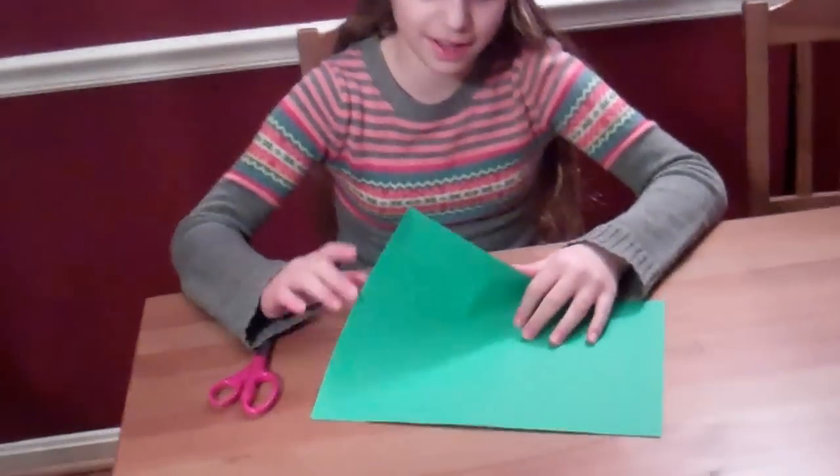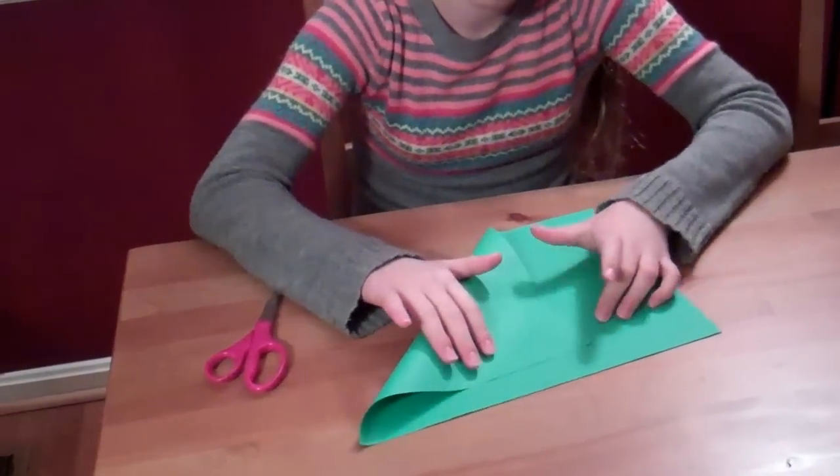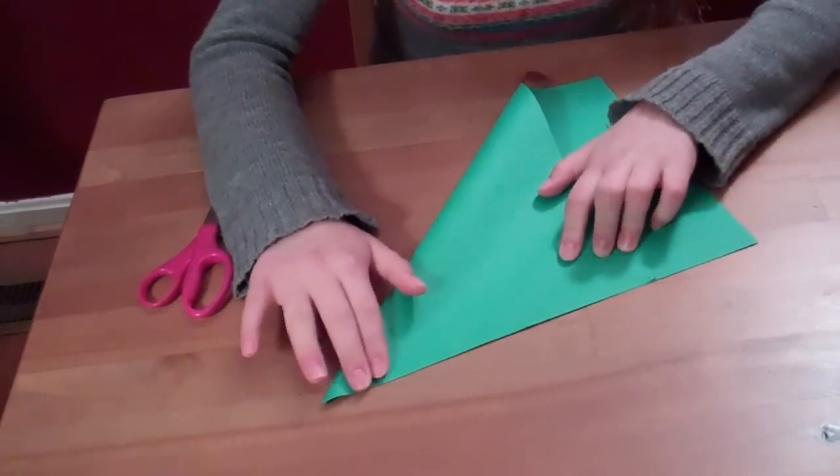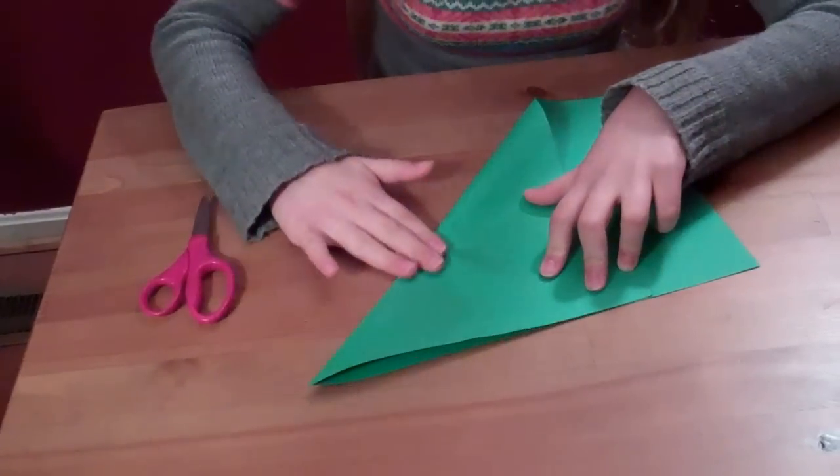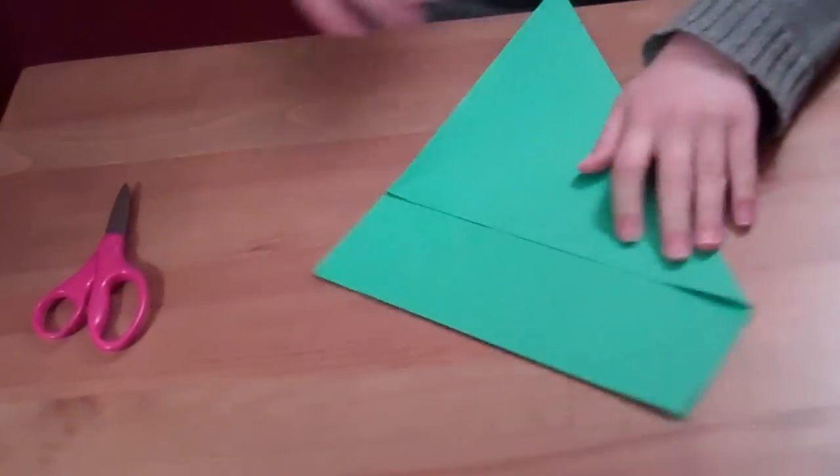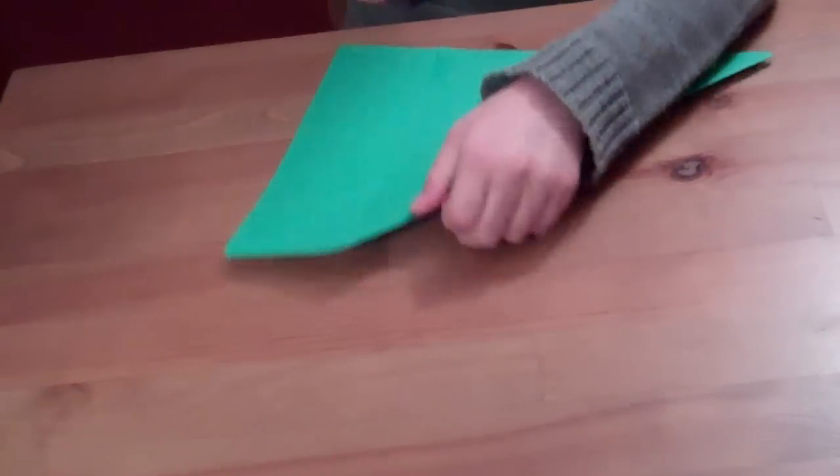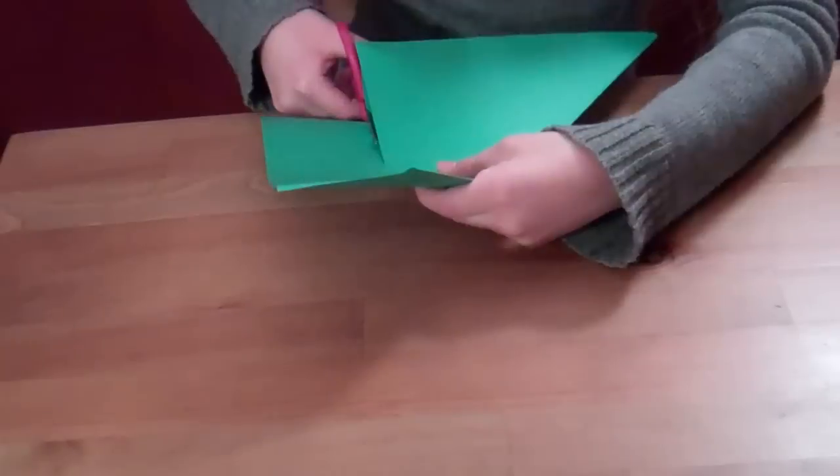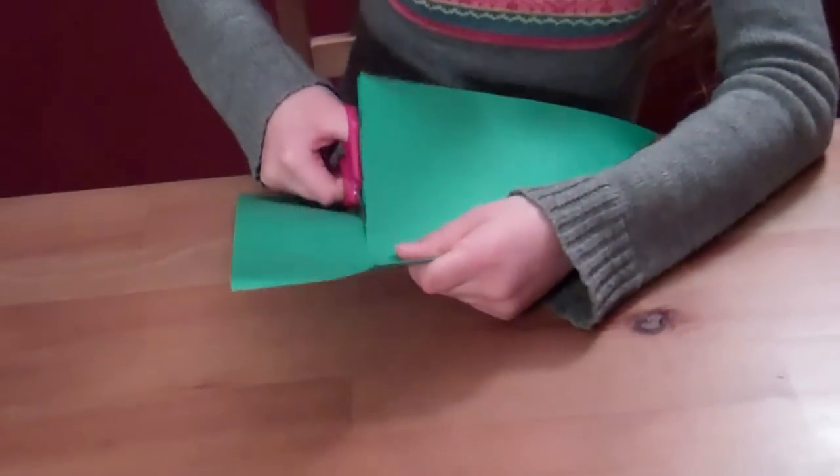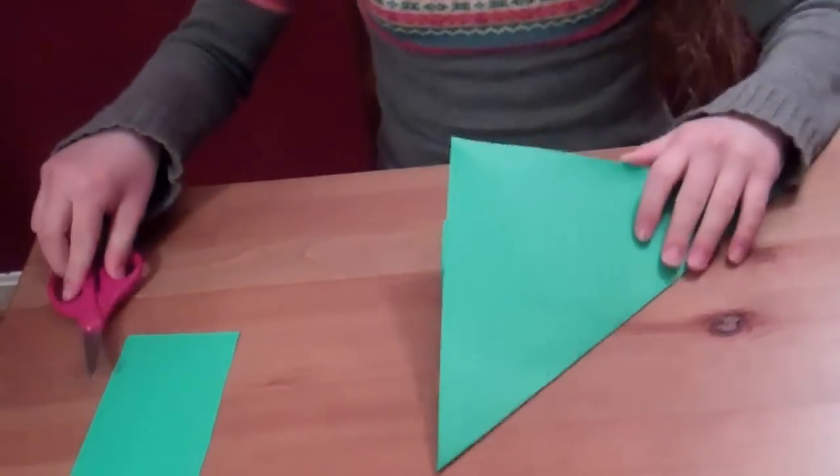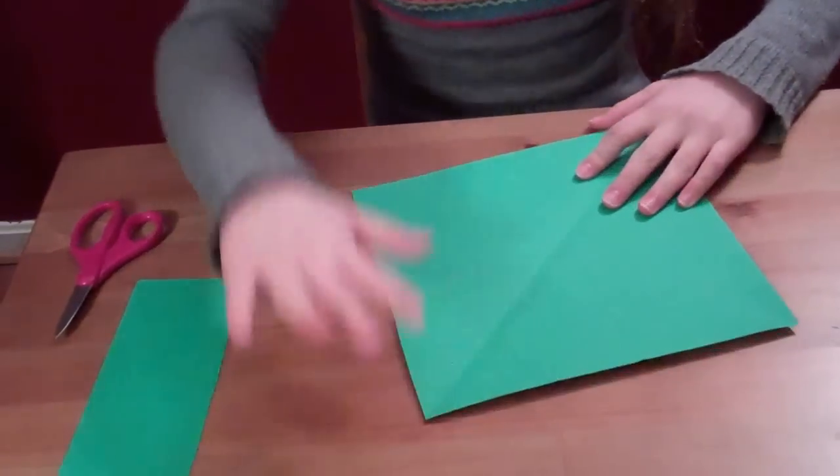You need a square, so you fold it like this. You don't have to do this if you already have a square. Fold it like this and then cut off the extra paper. There. Now I should have a square.